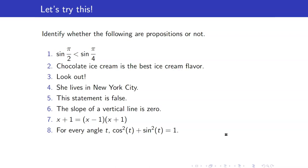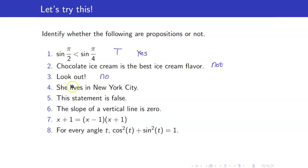'Sine pi over two is less than sine pi over four.' This is a proposition; in particular, this is true. Next, 'chocolate ice cream is the best ice cream flavor.' This is not a proposition because this is just an opinion — it can be true for some but false for other people. Next, number three: 'Look out!' Of course, this is not a proposition because this is an exclamatory sentence.